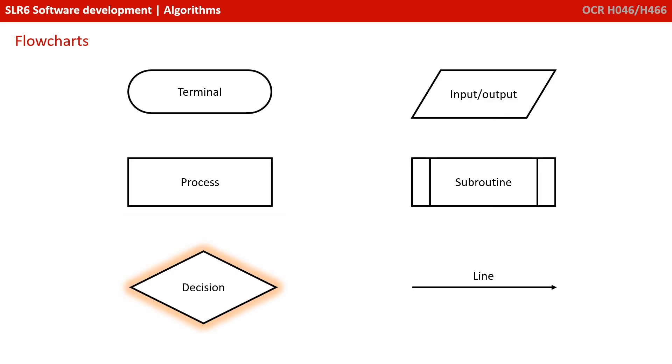You have a decision symbol, and this shape represents the decision. It will have a yes or no, true or false outcomes, which will be represented by two separate lines or paths exiting the shape.